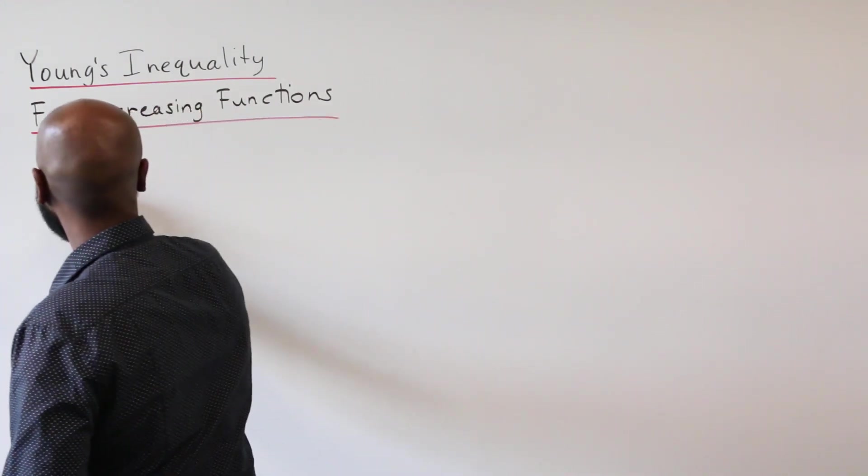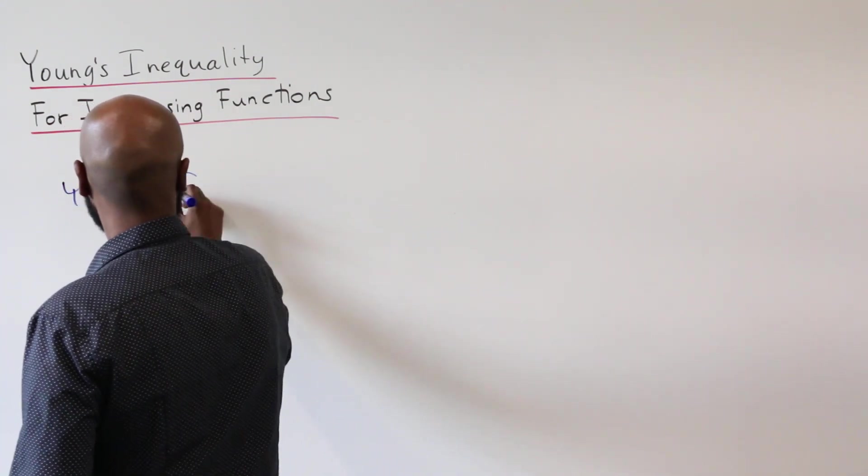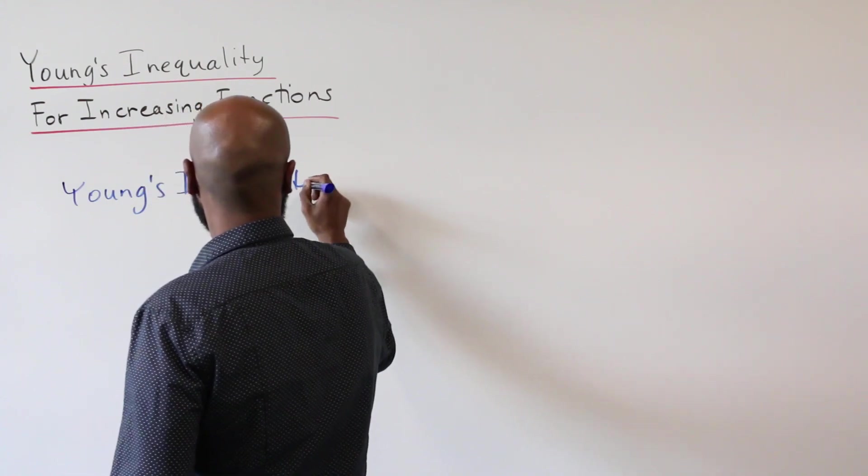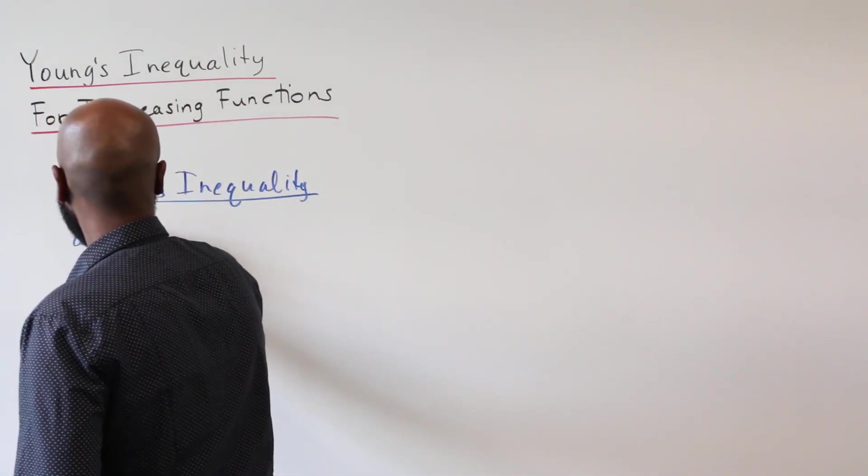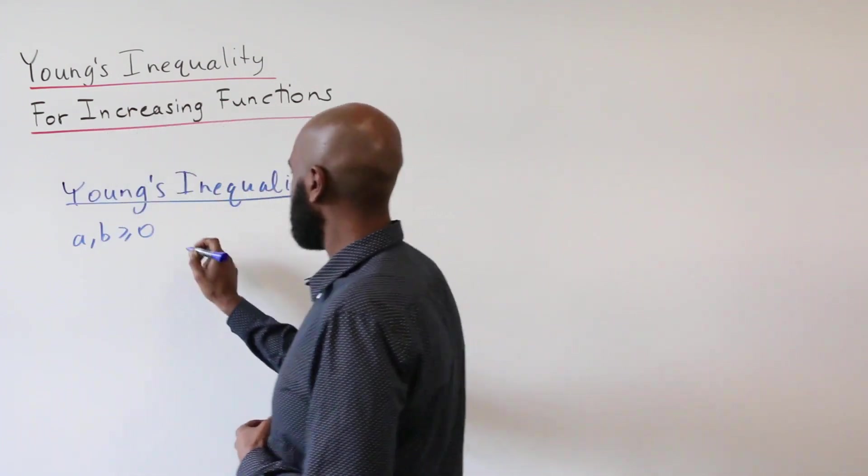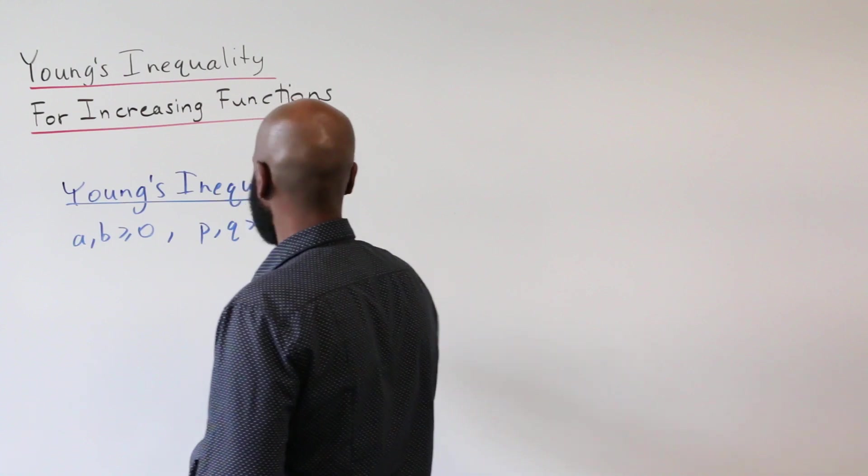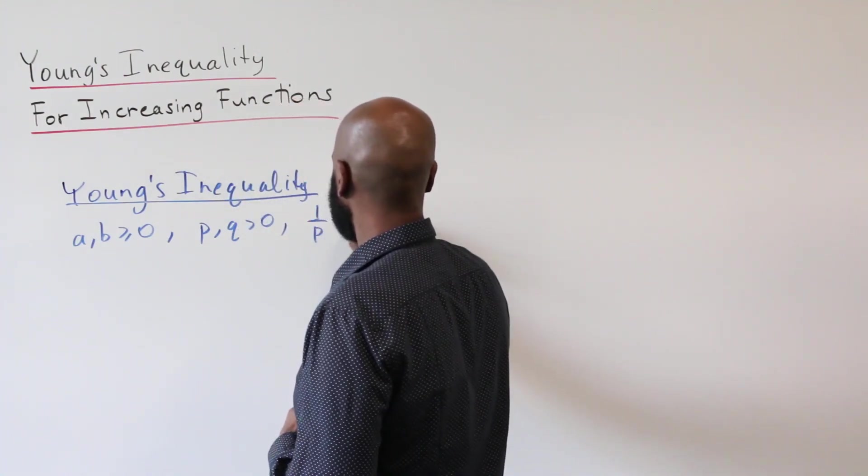So I'm going to start by talking about Young's inequality in two variables and it states that if you have two real numbers that are non-negative and two positive real numbers P and Q with the property that 1 over P plus 1 over Q is 1,